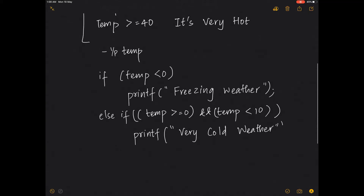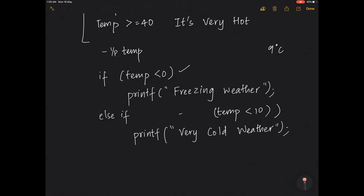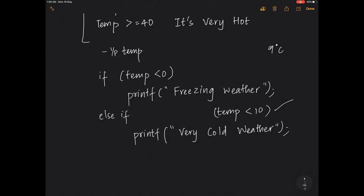The other format is: if it is less than zero. Imagine a temperature of 9 degrees Celsius. It checks the first condition — temperature less than zero — which is false. So it goes to the next condition. What if I replace the entire condition with just 'temperature less than 10'? For 9 degrees Celsius, it's not less than zero, so it checks less than 10, which is true, and prints 'very cold weather'.